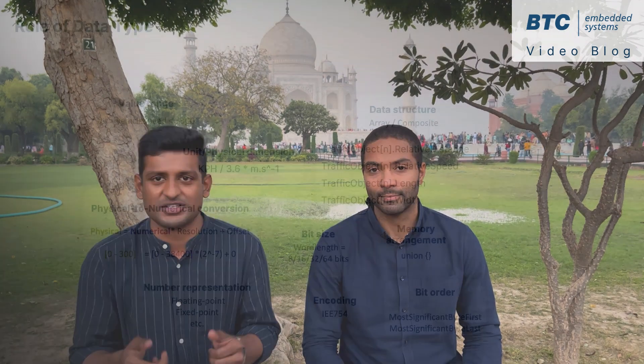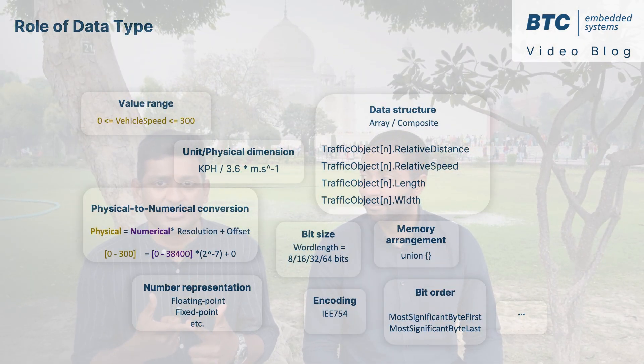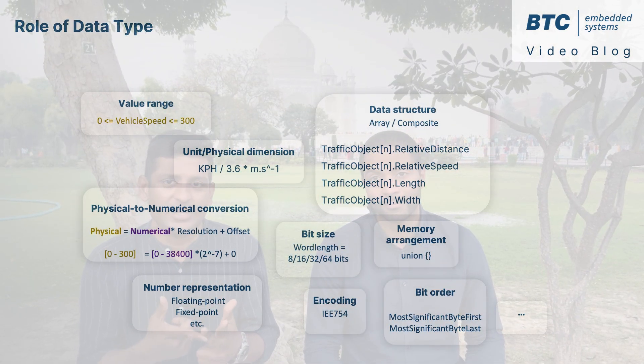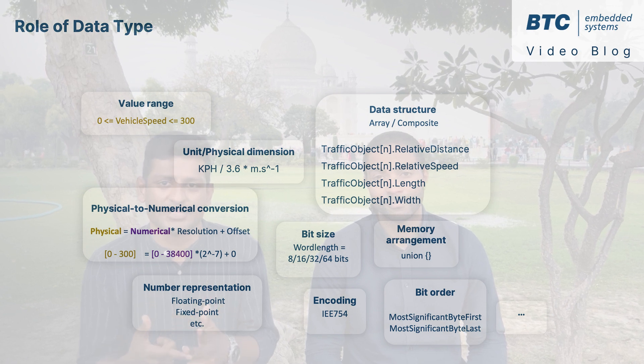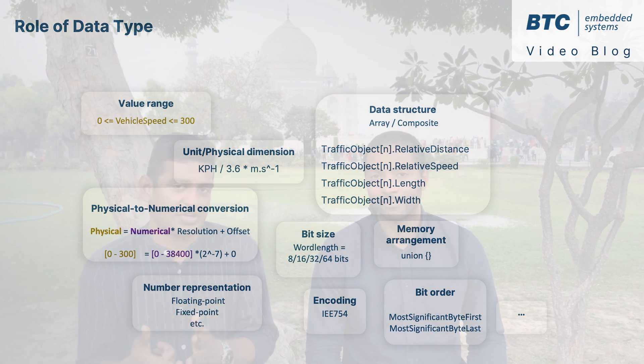A data type in AutoZar has a primary role to describe and implement the data exchange between software components. It defines, among others, data attributes such as numerical range of values, physical semantics, and when needed, the structure of composite data such as an array or a structure.